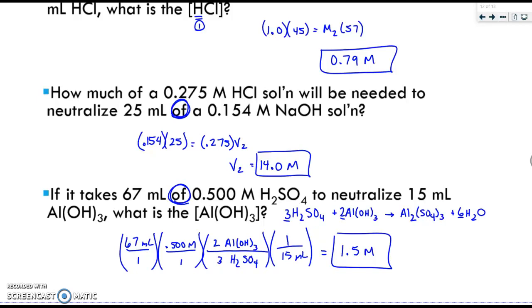For the next one, you would notice that H₂ and OH₃ are not the same. They are not 1 to 1. Since they're not 1 to 1, you have to do stoichiometry. So you are asked to first balance the chemical equation, as I have done for you, and then complete the problem.